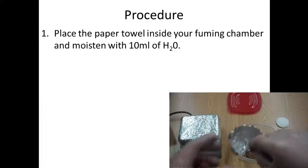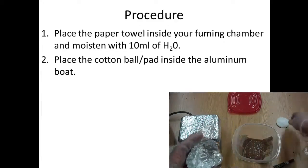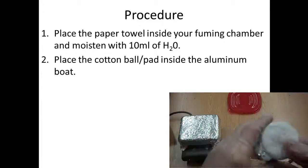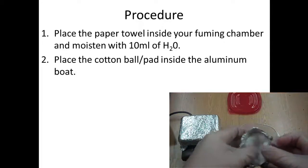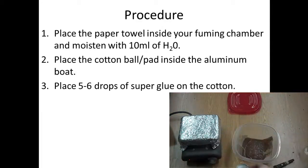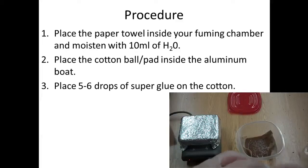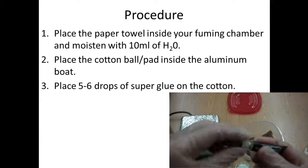Take the cotton ball or the cotton pad and place it inside the aluminum boat. And to that, place about five to six drops of the superglue on the cotton, being very careful not to get any superglue on your fingers because it will cause them to stick together.